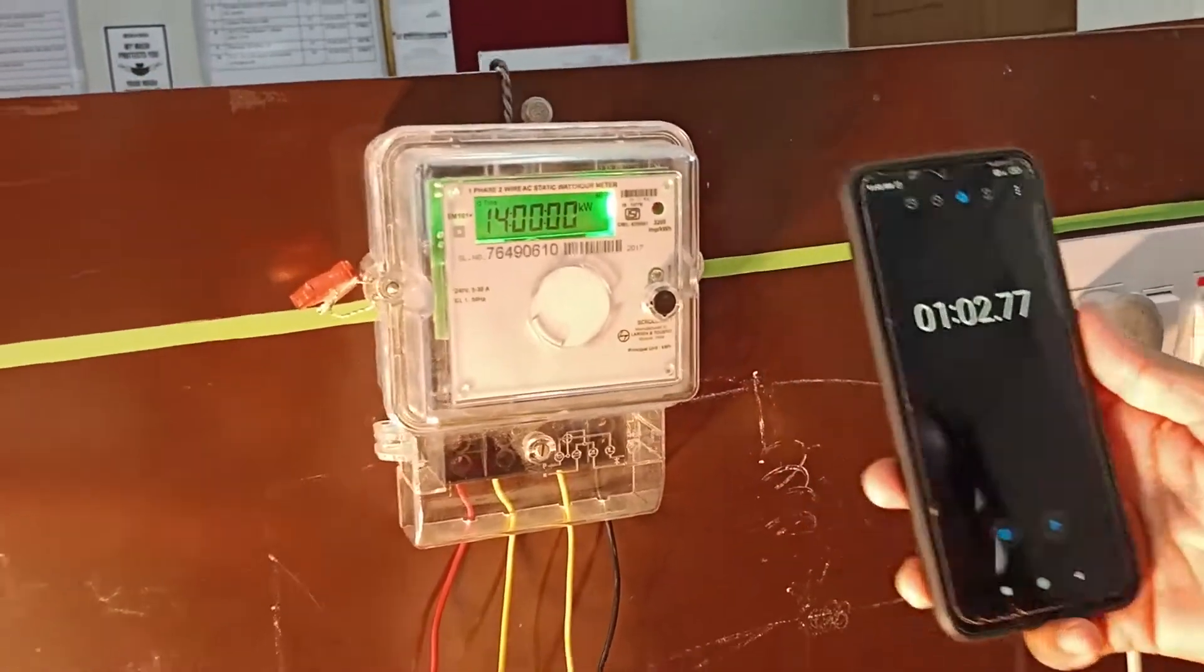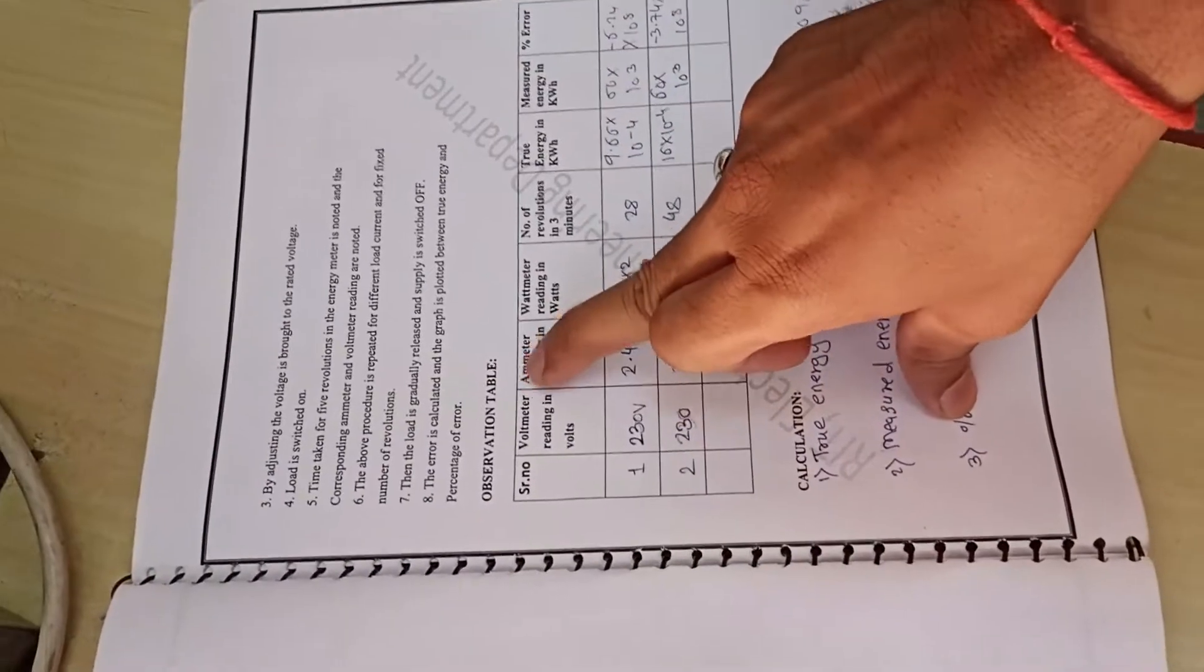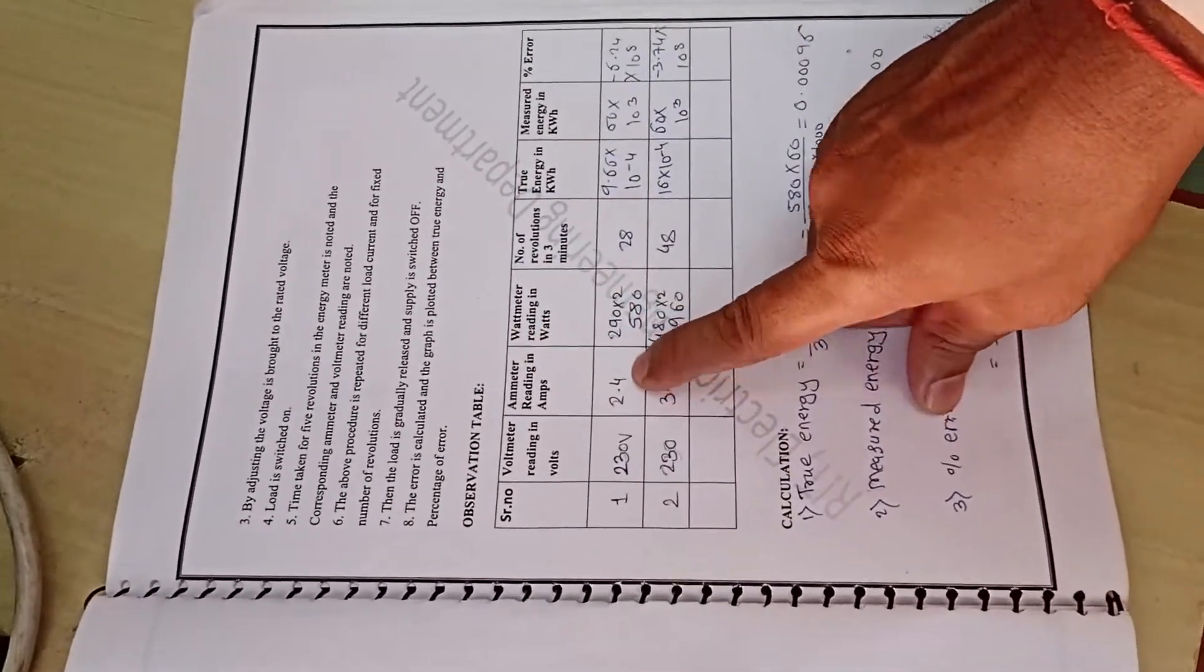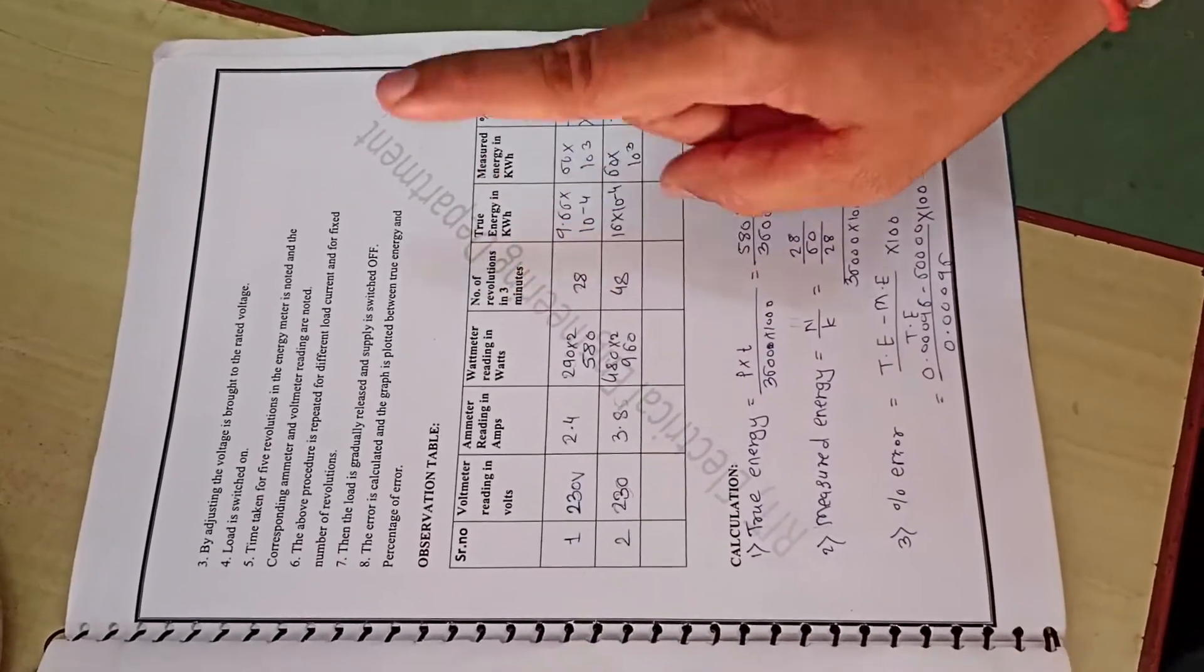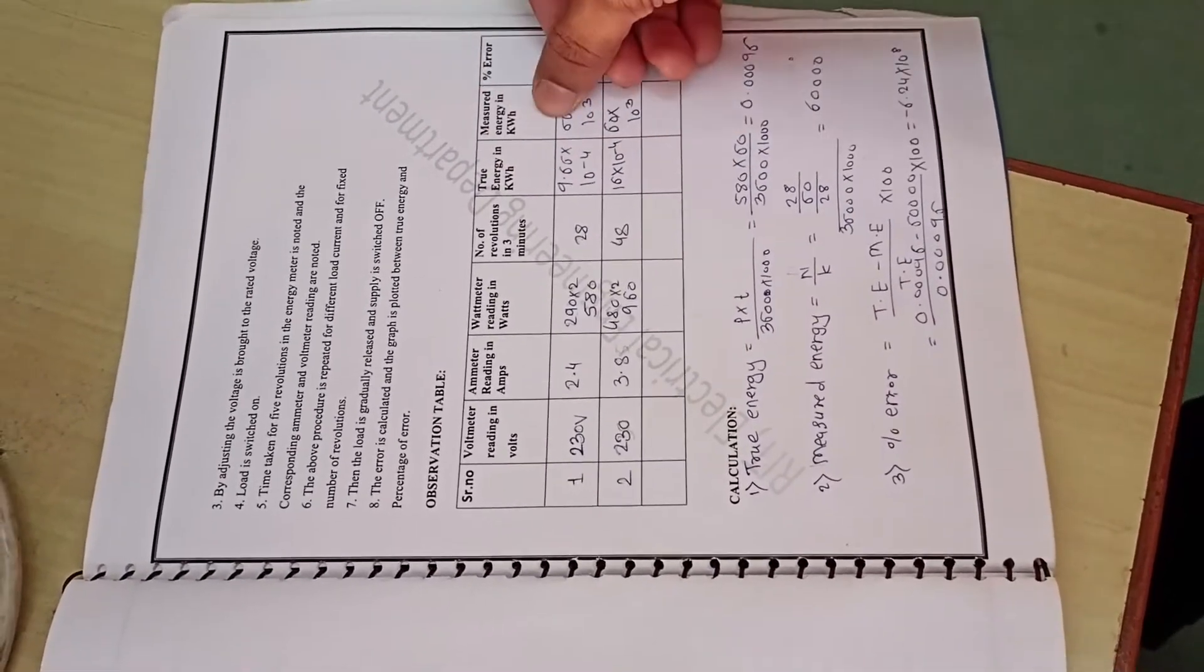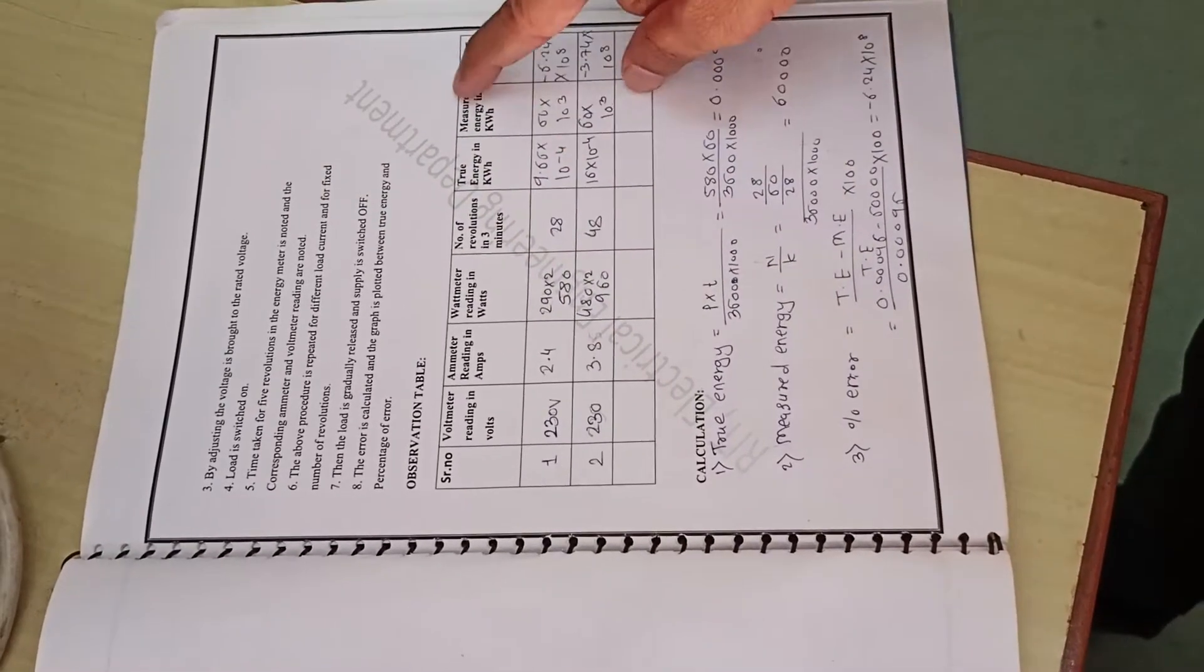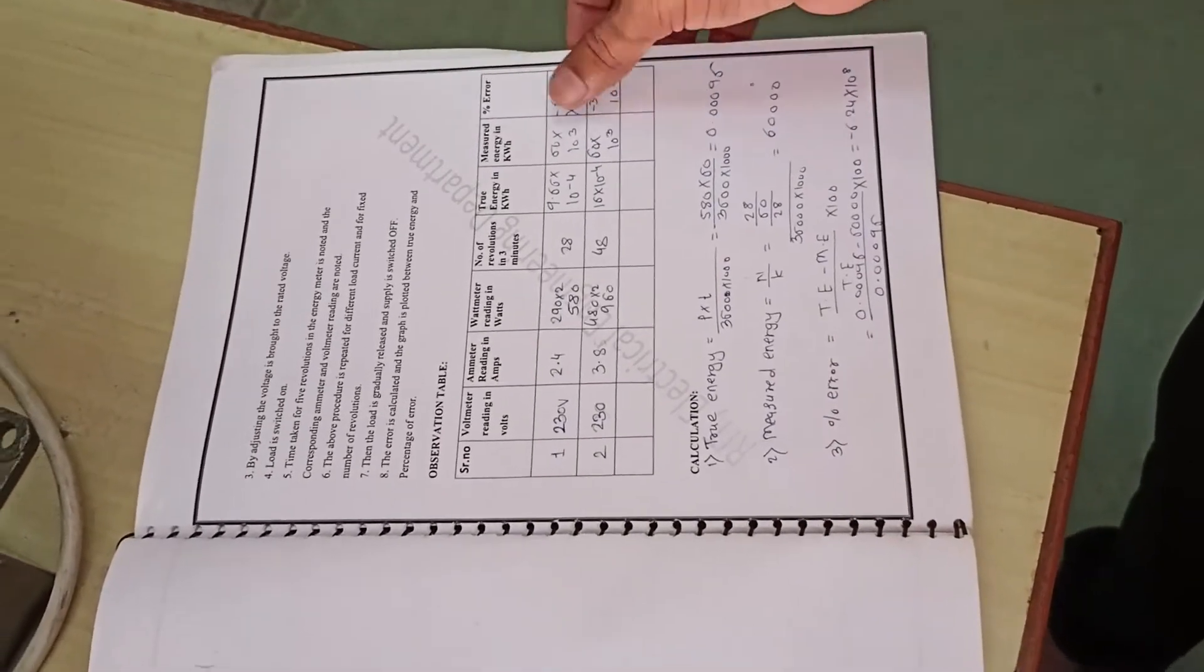As per the observation table we have noted voltmeter reading as 230 volt, ammeter reading, wattmeter reading. We have calculated number of revolutions in three minutes. True energy means actual energy calculated theoretically. For 1000 watt load we calculated and measured same for wattmeter and we are calculating the error between these two.